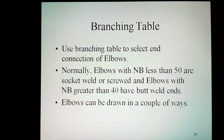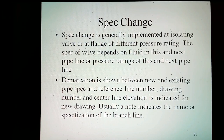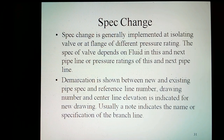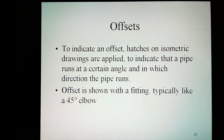Elbows can be done in a couple of ways. A spec change is generally implemented at an isolating valve or at a plant boundary with a different pressure rating. The spec of the valve depends on the fluid and the pressure ratings of this and the next pipeline. Demarcation is shown between new and existing pipe with reference line number. Drawing number and centerline elevation are indicated for a new drawing. Usually a note indicates the name or specification of a branch line.